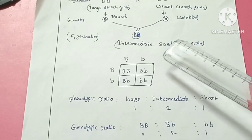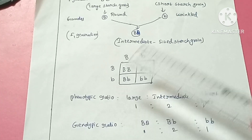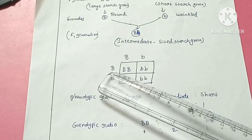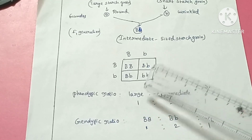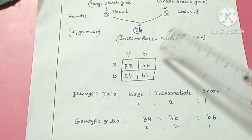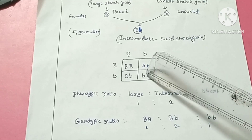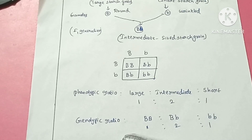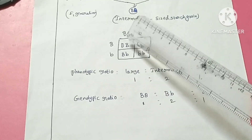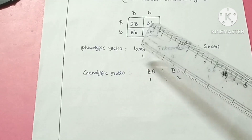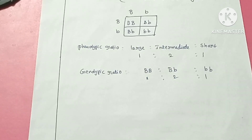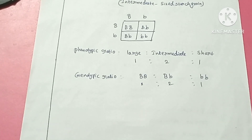The resulting phenotypic ratio is: one large-sized seed, two intermediate-sized seeds, and one small-sized seed — that is 1:2:1. The genotypic ratio is also 1:2:1: one BB, two Bb, and one bb. The phenotypic and genotypic ratios are the same here. This is the concept of pleiotropy. In the next video we are going to study about dihybrid cross.